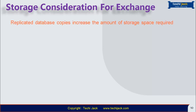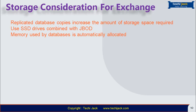Replicated database copies increase the amount of storage space required. If your organization uses DAG to replicate mailbox databases for high availability, consider the number of database copies when calculating how much disk space you need. Use SSD drives combined with JBOD — the ratio of SSDs to spinning disks is 1 to 3, where SSD stores a maximum of 10% of key data in a metacache database. In Exchange Server 2019, memory used by the database is automatically allocated from passive to active mailbox database copies, so passive copies do not waste memory while active copies gain increased memory for better performance.